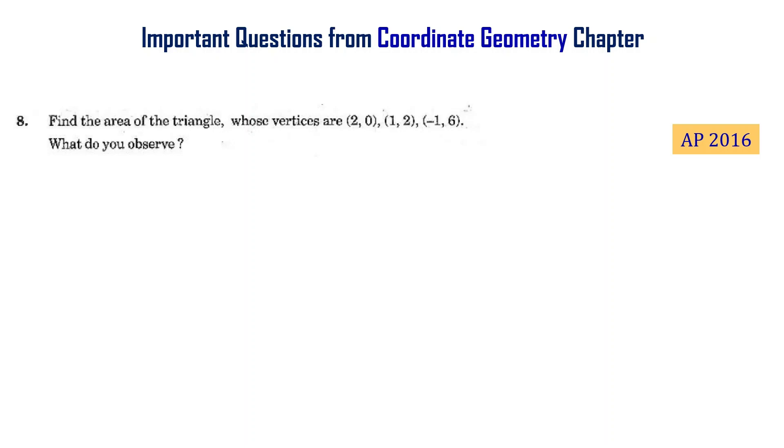Find the area of the triangle whose vertices are (2,0), (1,2) and (-1,6). What do you observe? The question is from AP Final Exam 2016. Let us solve this now.